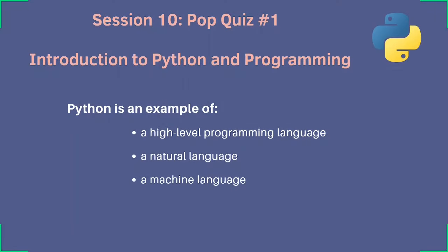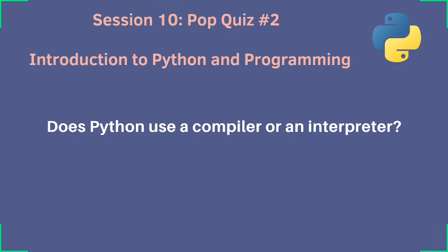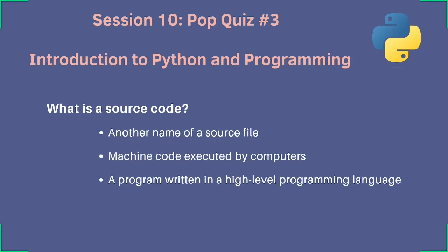Let's do some quizzes — simple questions covering the last nine sessions. First: Python is an example of what kind of language? High-level programming language. Second: does Python use a compiler or an interpreter? Interpreter. Third: what is source code — is it another name for a source file, machine code executed by the computer, or a program written in a high-level programming language? The correct answer is a program written in a high-level programming language. Source code is simply the Python code you write.